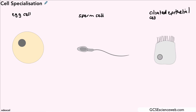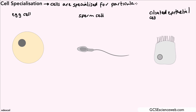Now if we were looking at specialization, well what do we mean by specialization? Well, in fact all the cells in the body all have a particular job, and to do that particular job they need to be specialized in terms of how they look and the kinds of parts they contain to do particular functions. So we're looking at just three examples of those cells.